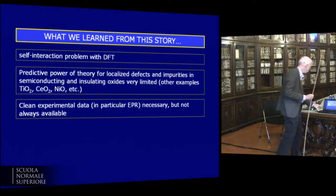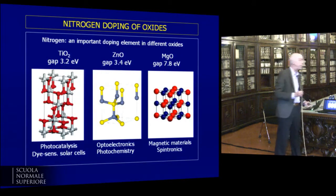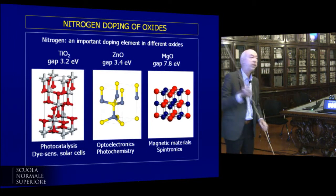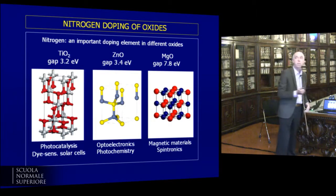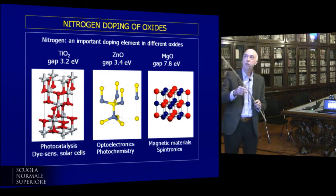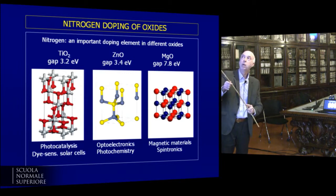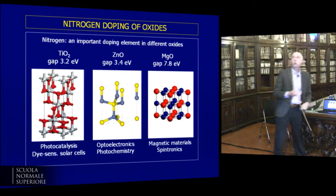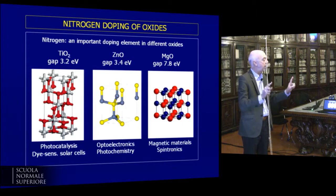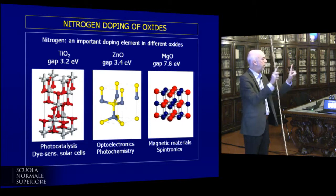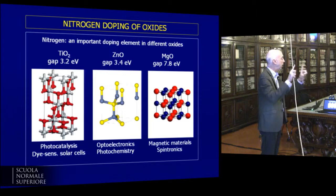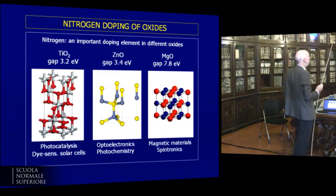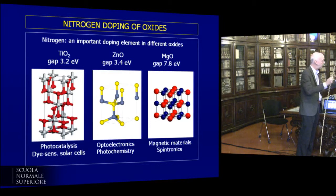Now I will make a connection between this part and the problem of nitrogen doping in three different materials. I will first describe the general nature of nitrogen dopants in TiO2, zinc oxide, and magnesium oxide. And I will come to another problem, because when you have magnetic impurities in a material, they can interact and give rise to a magnetic ordering — ferromagnetic or anti-ferromagnetic. In particular for the case of nitrogen-doped magnesium oxide, I will discuss another problem.